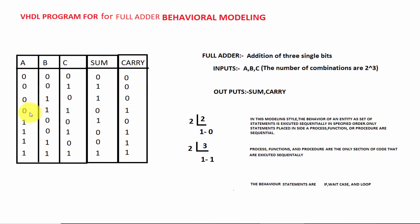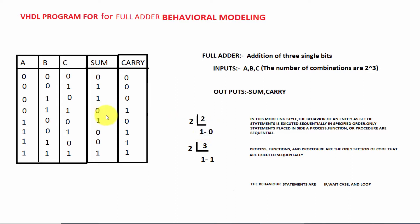For 0 1 1: 0 plus 1 is 1, and 1 plus 1 is 2. The binary value of 2 is 1 0. Using 2 divided by 2 gives remainder 0, so 1 0 comes out. Here 0 is the sum and 1 is the carry.